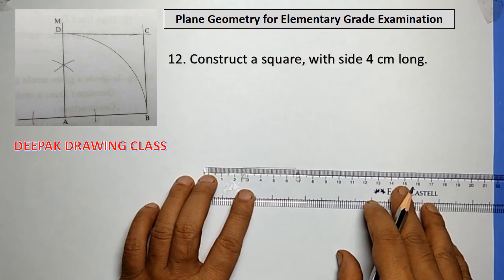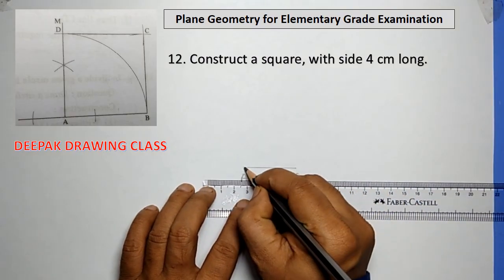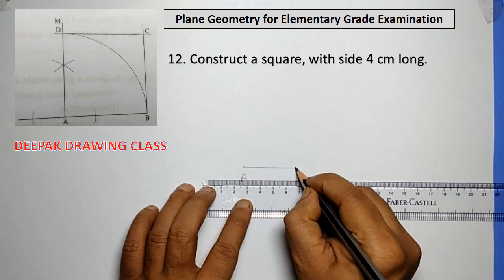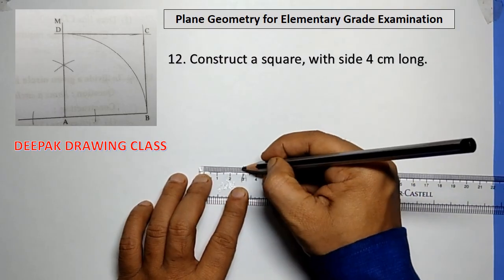Firstly, draw a line AB of 4 cm long. Extend this line to the left as shown in the given diagram.